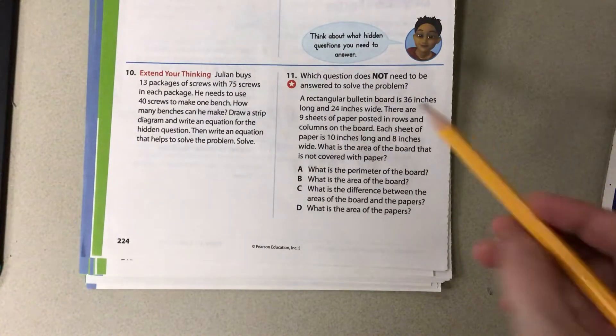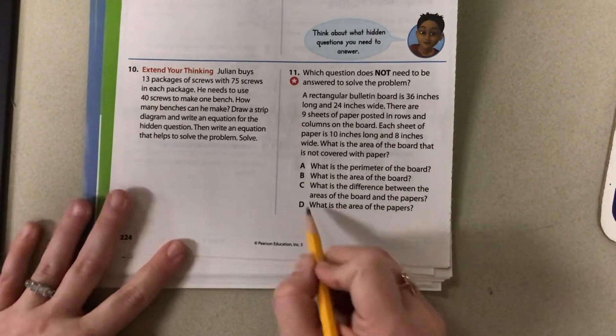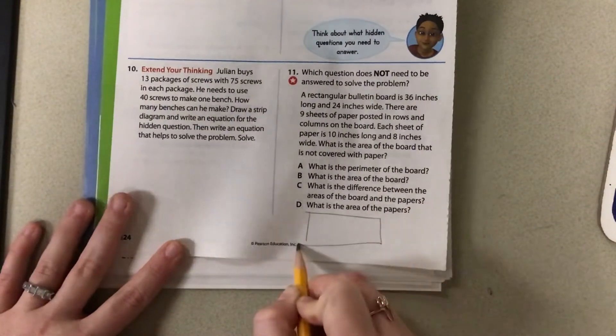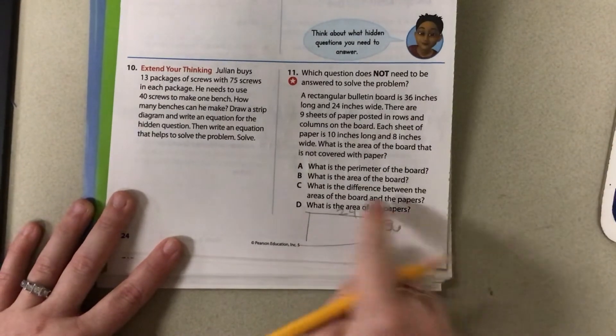So what does not need to be answered? Okay, so I need a picture. So I have a rectangular bulletin board and it is 24 by 36. It's okay if you wrote it opposite.